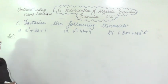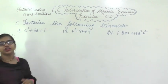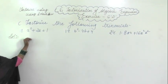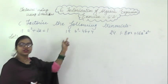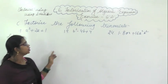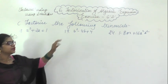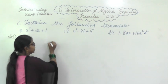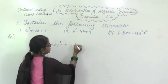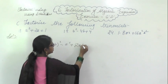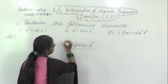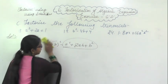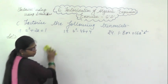This is question number C — factorize the following trinomials. We have already studied the (a+b)² and (a-b)² identities. Using these identities we have to factorize the given expressions. The identity (a+b)² equals a² + 2ab + b², and this form will be given — you have to find the factorization. Let's start with the very first question.